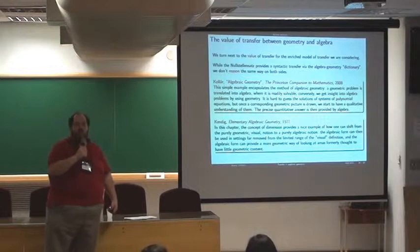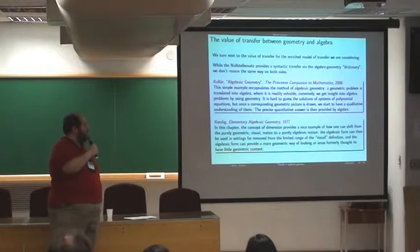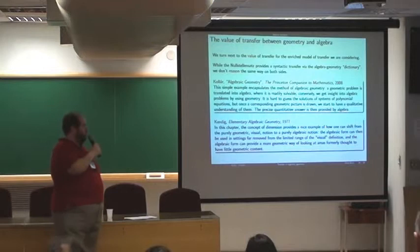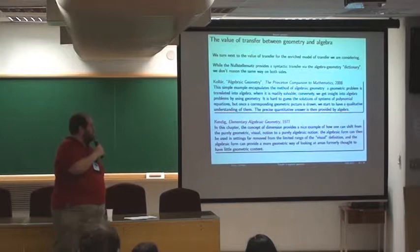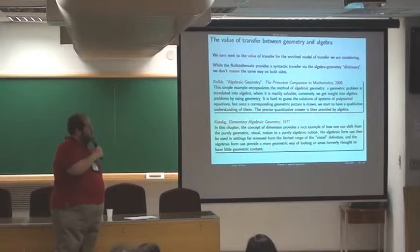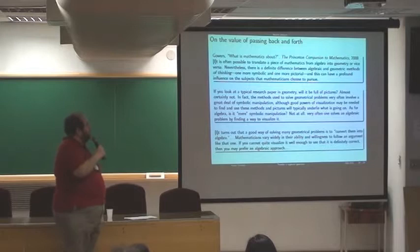All right, that's nice. I'll say a little more about that in a couple of slides. Here's another passage purporting to give some value to transfer. This is from Kendig's text in 77. So he writes in this chapter, the concept of dimension provides a nice example of how one can shift from the purely geometric visual notion to a purely algebraic notion. The algebraic form can then be used in settings far removed from the limited range of the visual definition. And the algebraic form can provide a more geometric way of looking at areas formerly thought to have little geometric content.